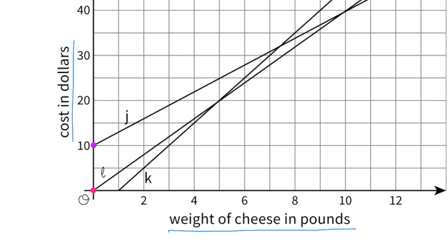Directly above the origin I labeled a point that represents ten dollars for zero pounds of cheese, and you can see the cost increasing as the number of pounds increases. Looking at five pounds on the horizontal axis, five pounds of cheese at this particular store costs exactly between twenty and thirty dollars, which would be twenty-five dollars.